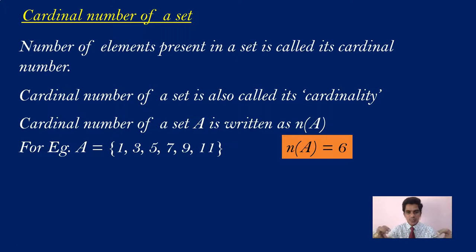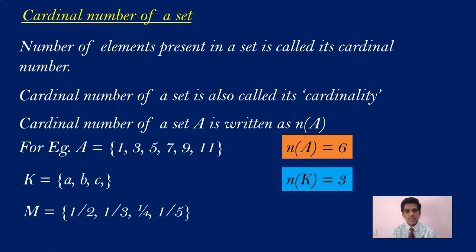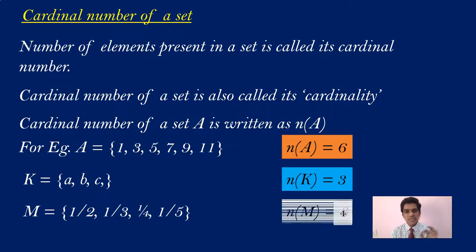So for the cardinal number, we simply write n(A). Have a look at this example. K is set of {a, b, c}. How many elements are there in K? There are actually 3, so we write n(K) = 3. Similarly, for a set M = {1/2, 1/3, 1/4, 1/5}, how many elements are there in M? There are actually 4, so we write n(M) = 4. This is how you write the cardinal number of a set.